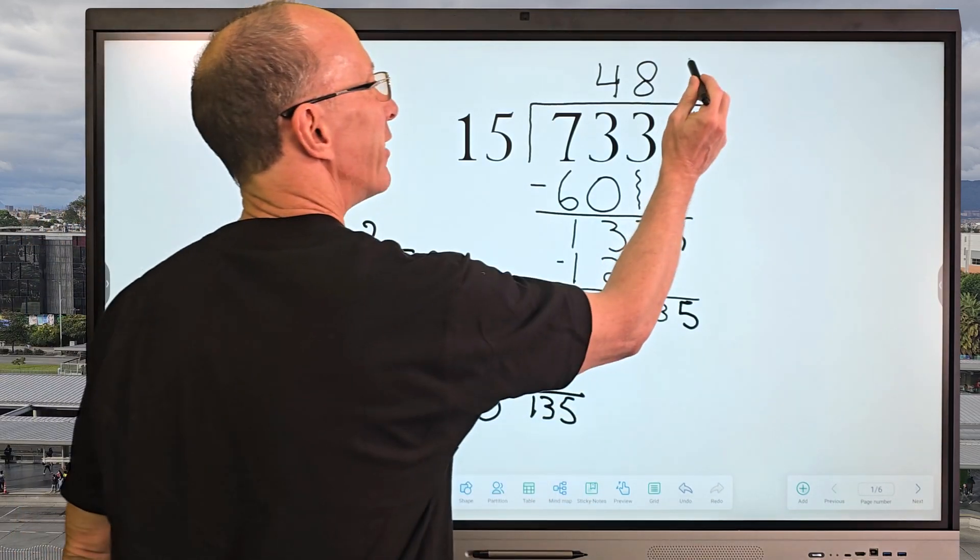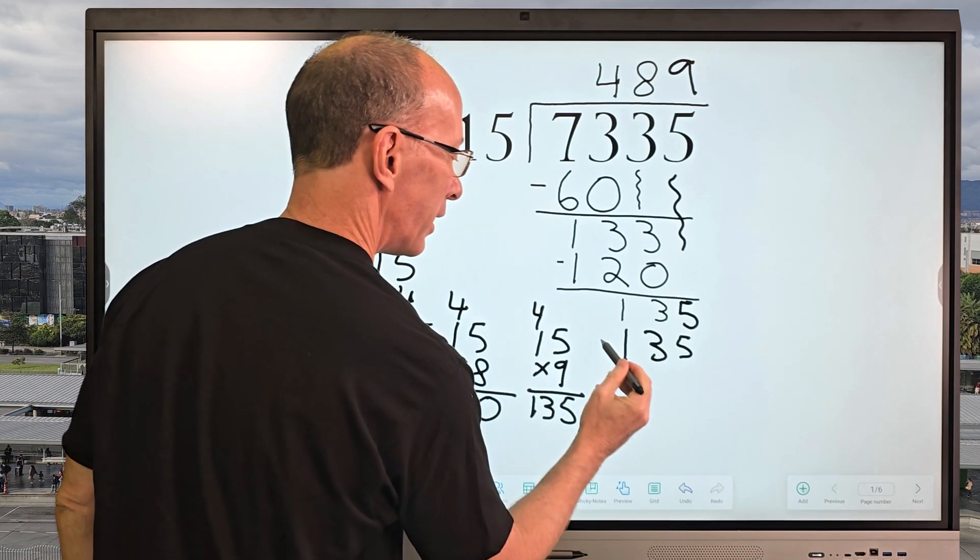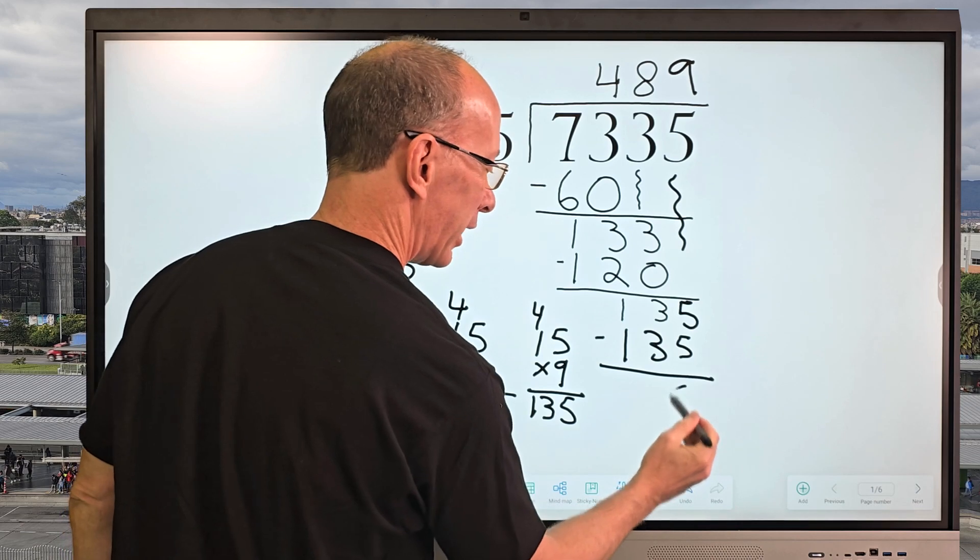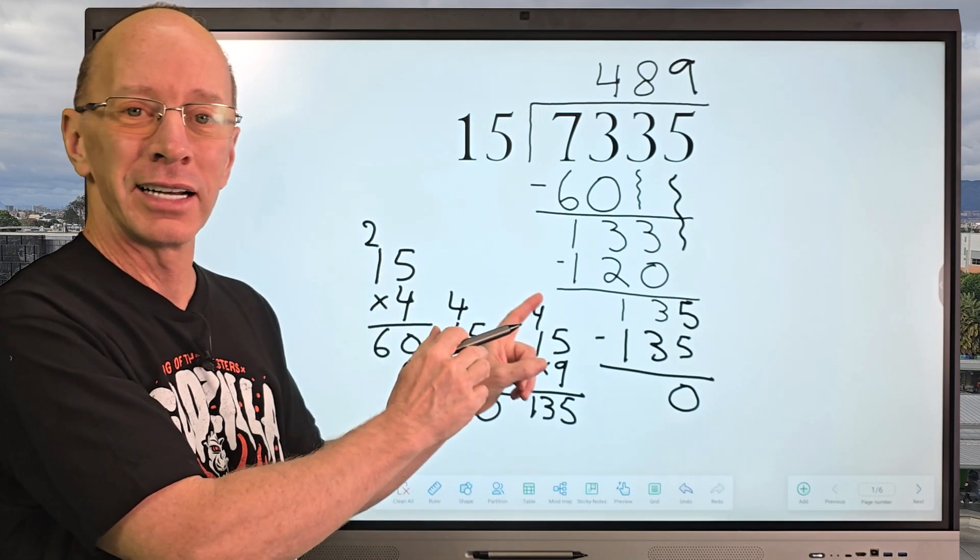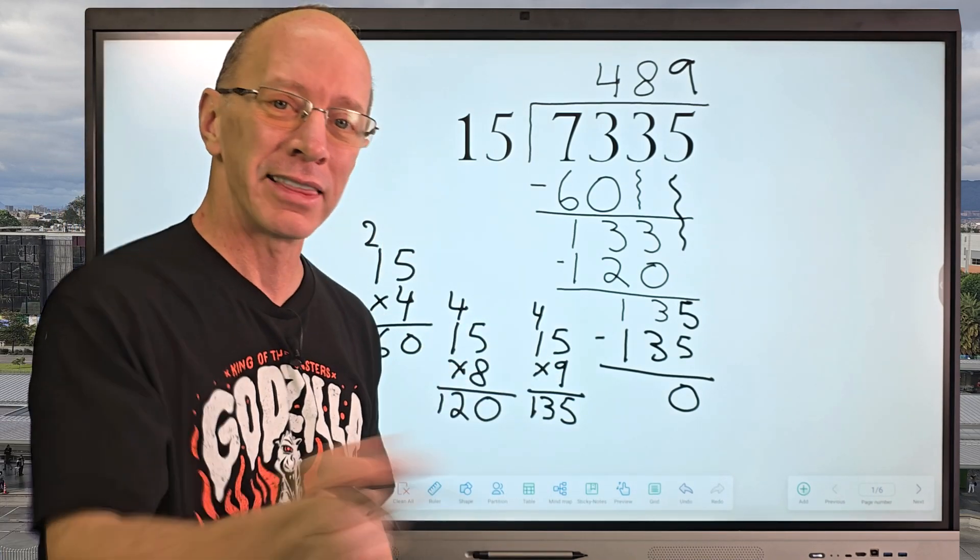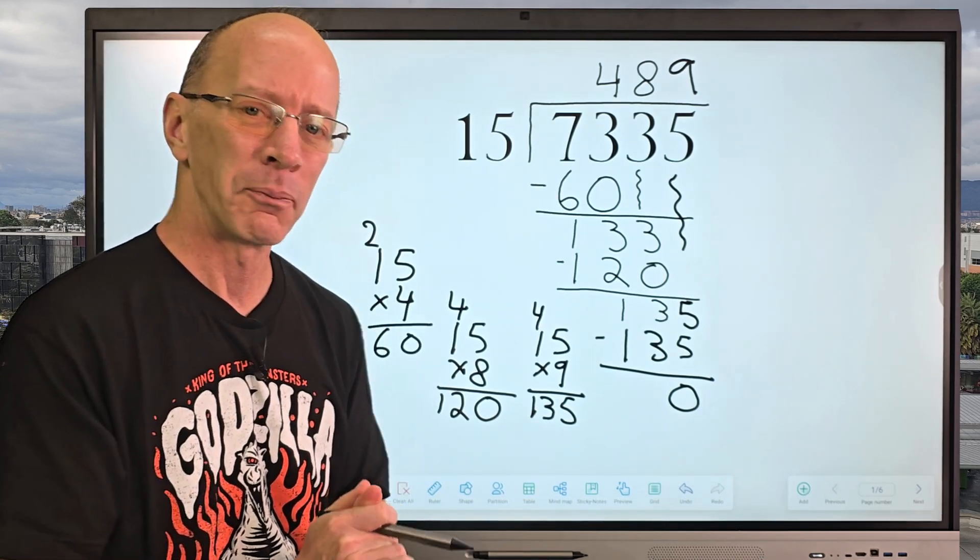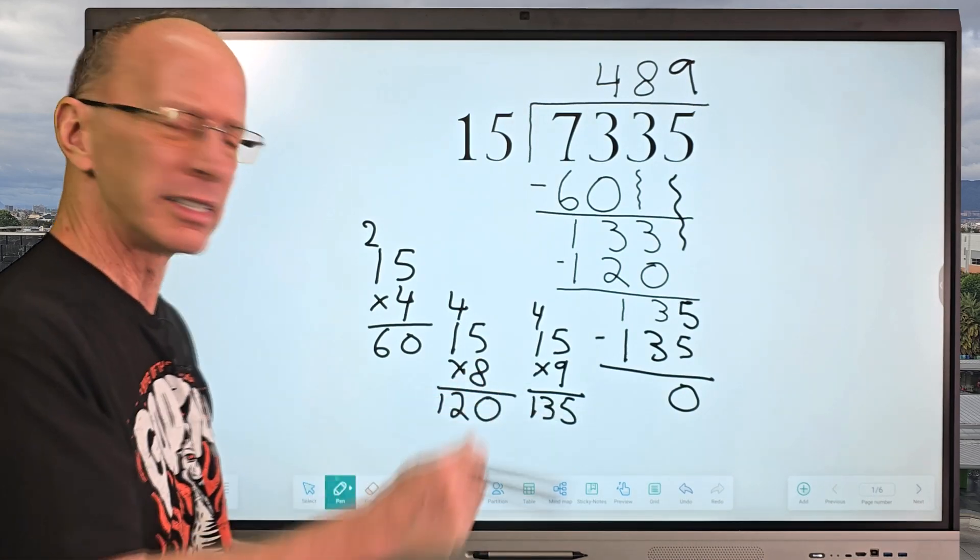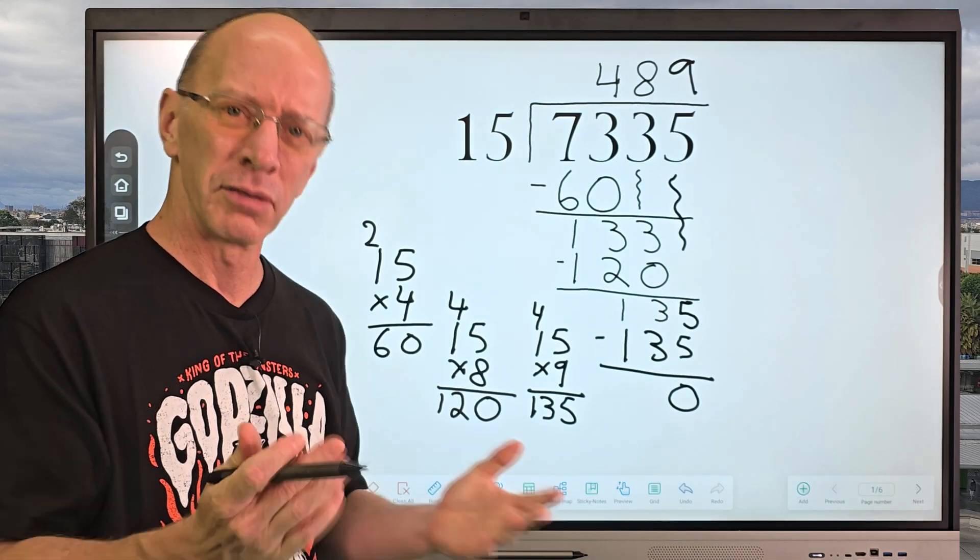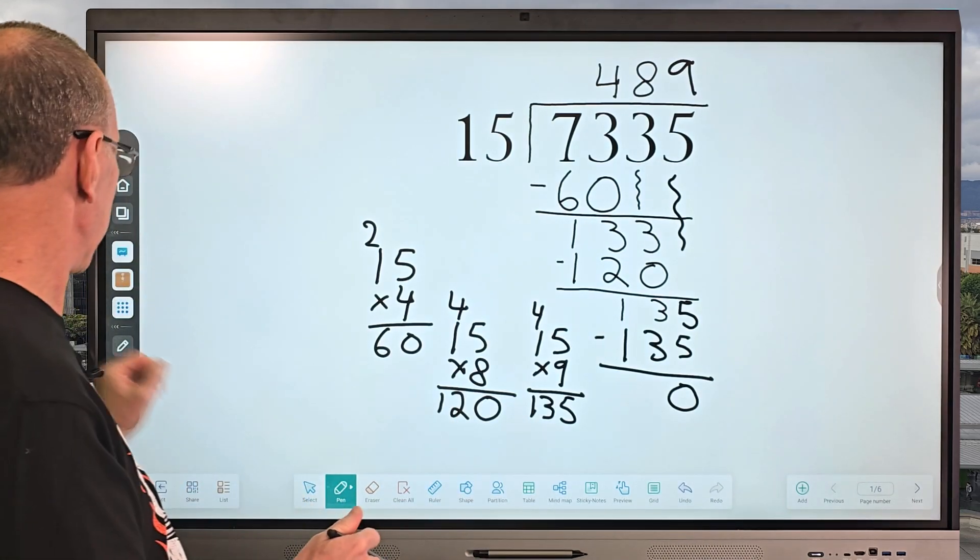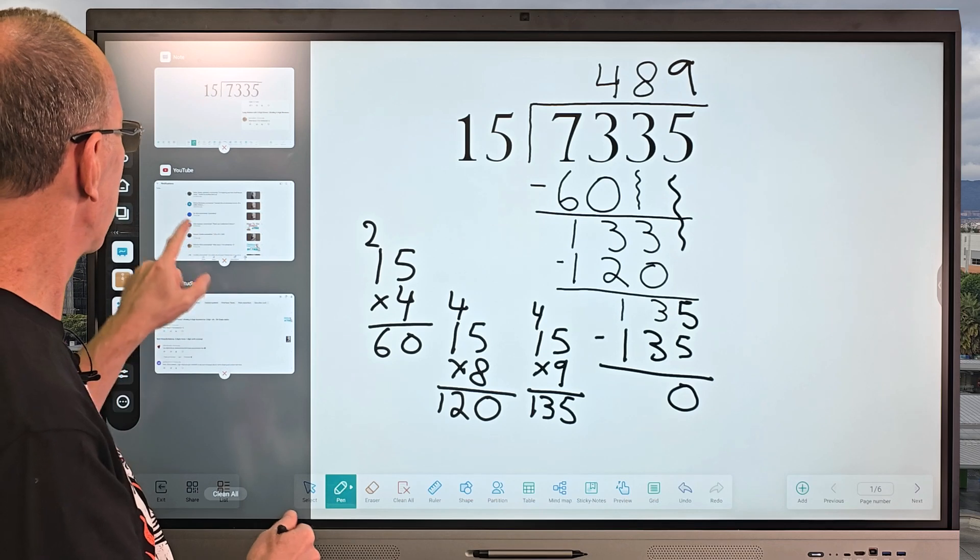So we're going to put 9 right here. So 9 times 15 would be 135. And we're going to go ahead and subtract. And we have a remainder of 0. That means we don't even have to put that remainder up there. That's the answer right there. That was an awesome problem. Hey, thanks a lot for requesting that. I always enjoy looking at the comments. And right now, let's go ahead and take a look at some comments here.